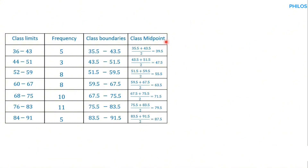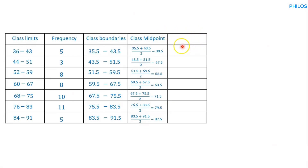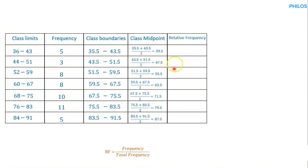Now let's find relative frequency. Let's add an extra column named relative frequency. The formula is: relative frequency equals the frequency of that particular class divided by the total frequency. For the first class, the frequency is 5. Adding all frequencies — 5 plus 3 plus 8 plus 8 plus 8 plus 10 plus 11 plus 5 — gives a total of 50. So the relative frequency of the first class is 5 divided by 50, which equals 0.1.